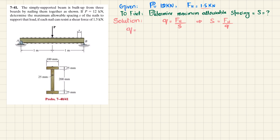q is equal to V_max times Q at the nail portion divided by I. We will need V_max, I, and Q. For maximum shear force, if I remove the support at point A there will be a reaction force R_A, and at point B if we remove the support there will be a reaction force R_B. We can find R_A and R_B using the equations of equilibrium.